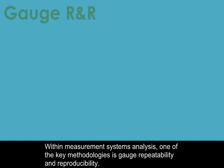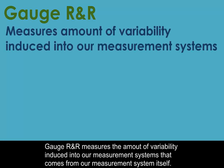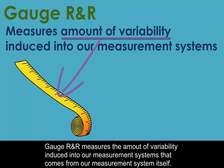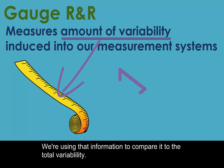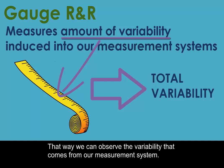Within measurement systems analysis, one of the key methodologies is gauge repeatability and reproducibility. Gauge R&R measures the amount of variability that's induced into our measurement systems that comes from the measurement system itself, and we're using that information to compare it to the total variability, so that we can observe the variability that comes from our measurement system.